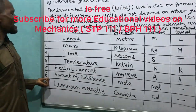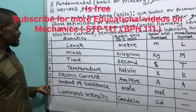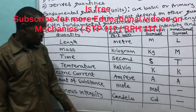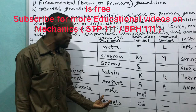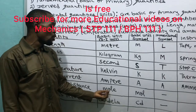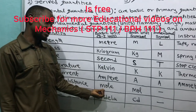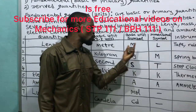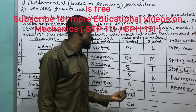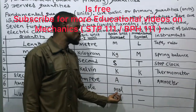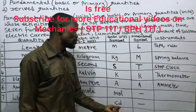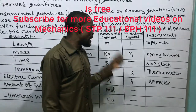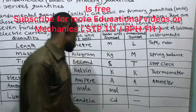Number six: amount of substance. The basic unit is the mole. The symbol is 'mol.' Amount of substance has no dimensional symbol.